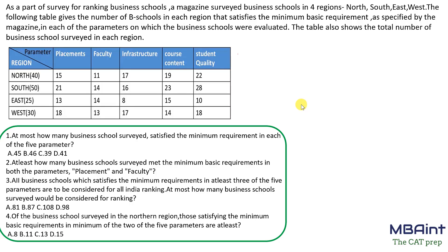Let's look into a set of optimizations of multiple sets. As part of a survey for ranking business schools, a magazine surveyed business schools in four regions: north, south, east, and west. The following table gives the number of B-schools in each region that satisfies the minimum basic requirements as specified by the magazine. The requirements are placement, faculty, infrastructure, course content, and student quality.